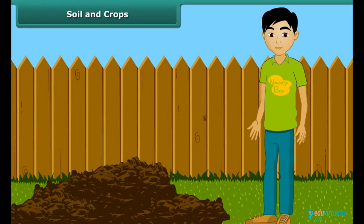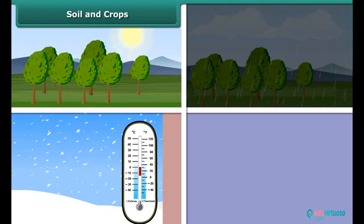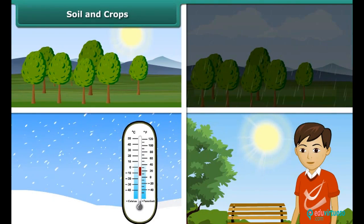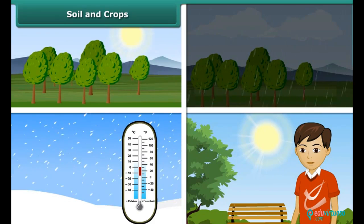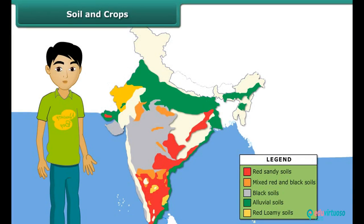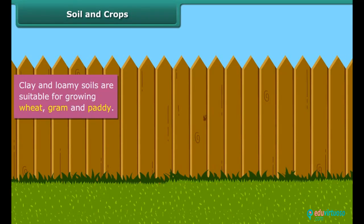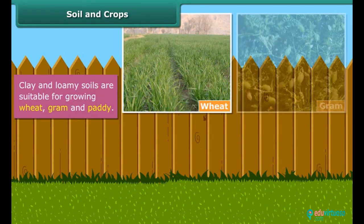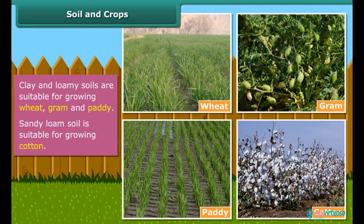Soil and Crops. Soil profile is affected by wind, rainfall, temperature, light and humidity. These factors determine the type of vegetation grown in that region. India is a vast country and different types of soils are found here. Clay and loamy soils are good at retaining water, so they are suitable for growing wheat, gram and paddy. Cotton is grown in sandy loam soil, which can drain water easily and can hold plenty of air.